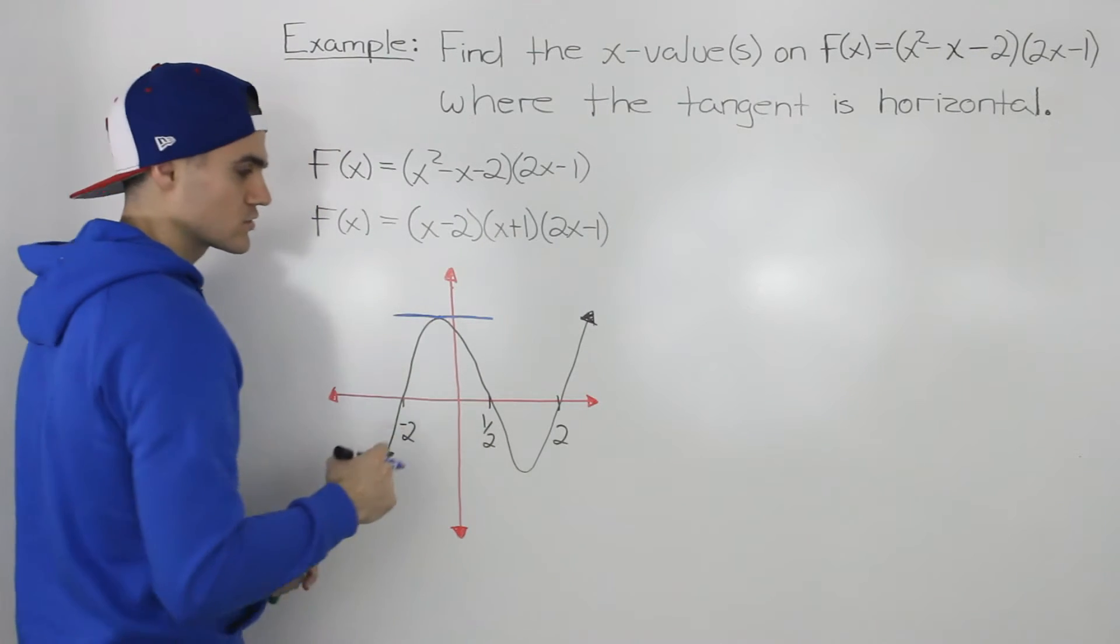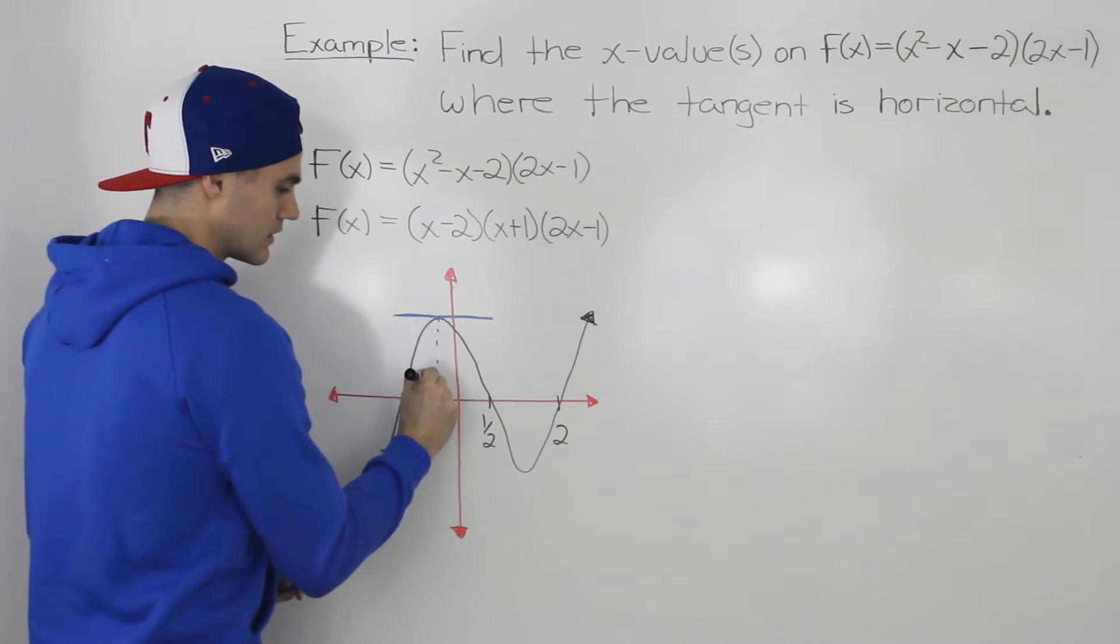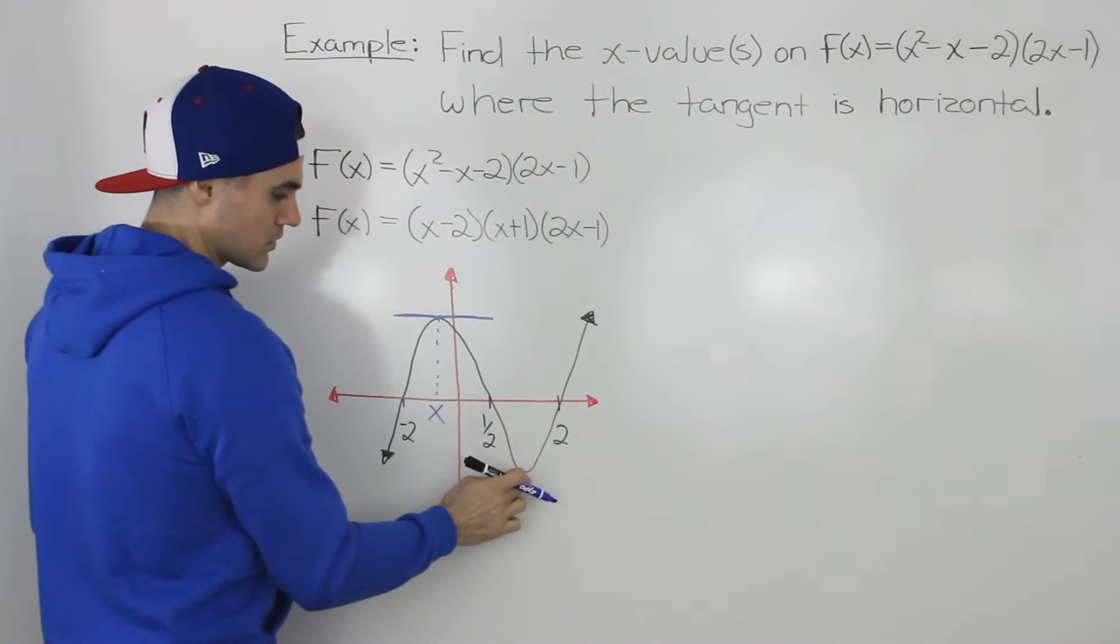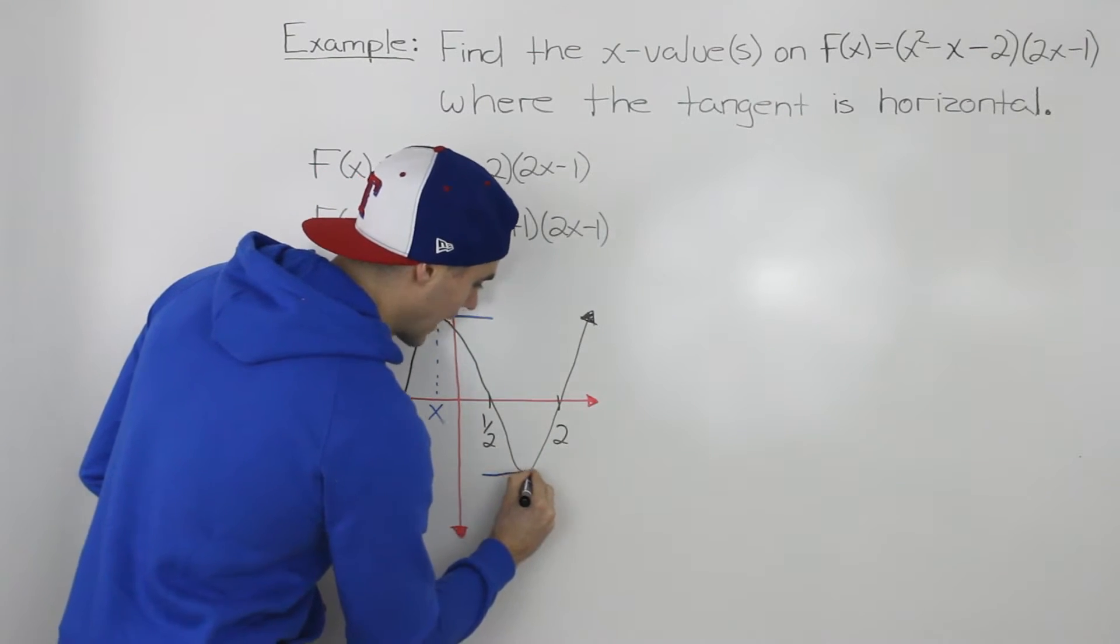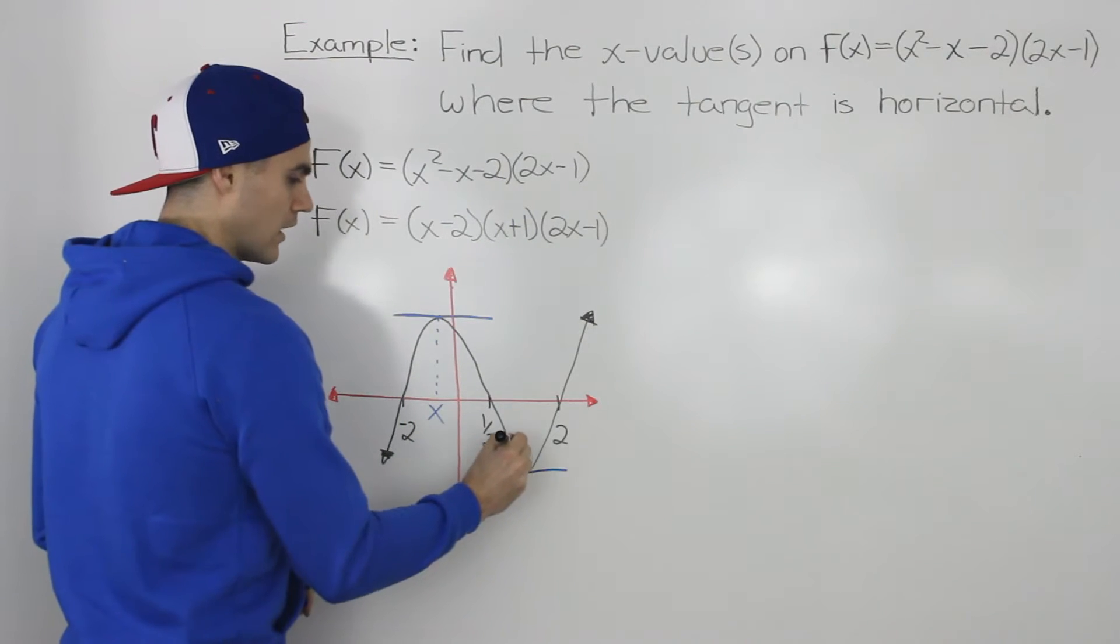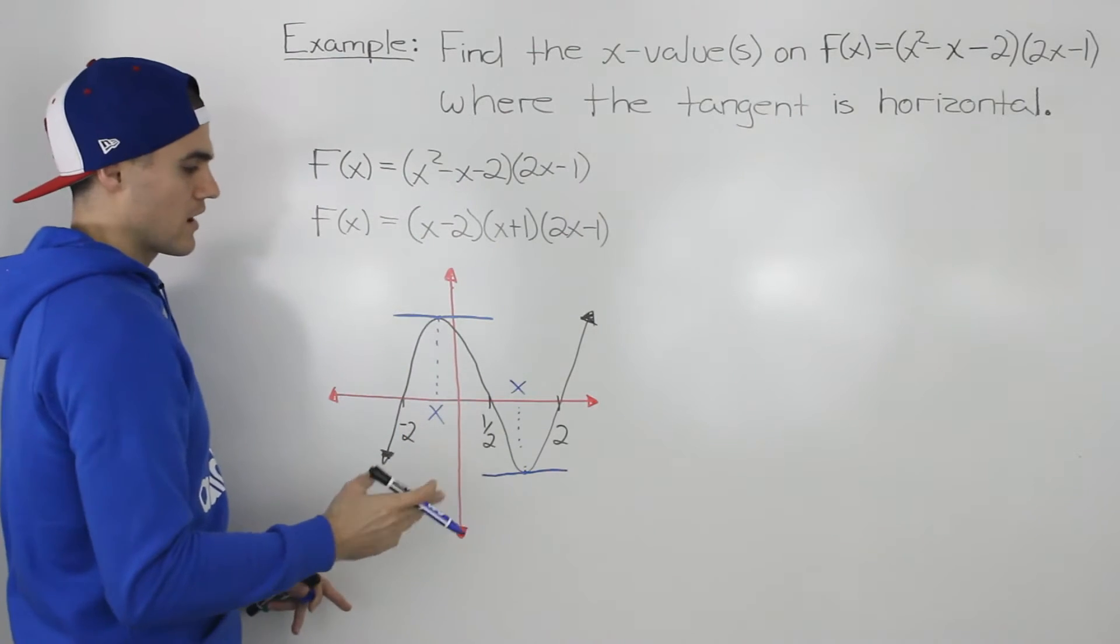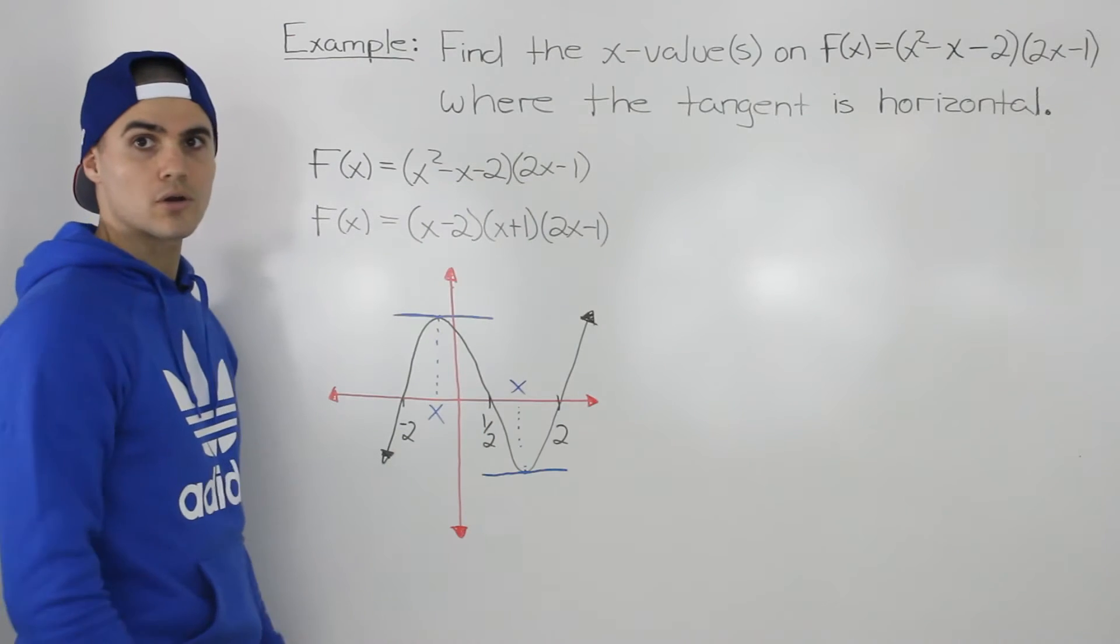It's going to have a slope of 0. So the question is asking at what x value is that happening? Also notice here how the tangent is going to be horizontal at this local min value as well. So what x value is that happening at? From this diagram, you can tell that we're going to get two answers for our question.